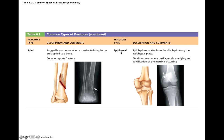An epiphyseal fracture is where the diaphysis and the epiphysis separate, typically occurring along the epiphyseal plate or epiphyseal line. It occurs where cartilage cells are dying and calcification of the matrix is happening, because calcified cartilage is weaker than bone — making it a weak point in long bones. Epiphyseal fractures are more common in children and adolescents whose bones are still growing at the epiphyseal plate.